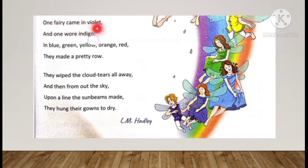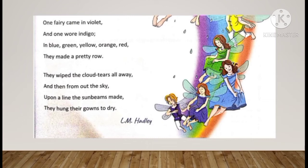'One fairy came in violet and one wore indigo, in blue, green, yellow, orange, red they made a pretty row.' Is mein kya hai: jo ek fairy thi woh violet mein aayi, ek indigo mein aayi, aur is tarah blue, green, yellow, orange, red — in colors mein sari fairies one by one Sun ne bhejna shuru ki aur unhon ne ek bohat sundar row bana li.